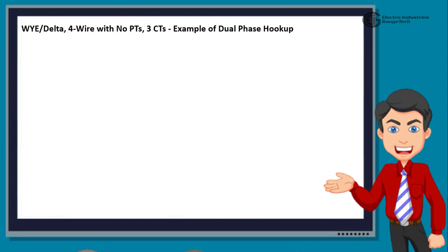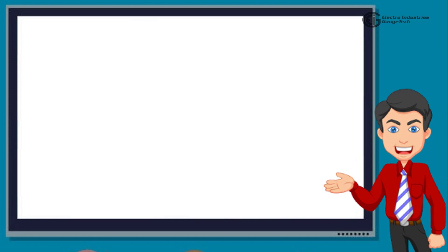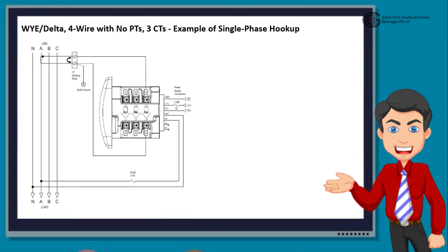For the same Y-Delta, 4 wire with no PTs, 3 CTs connection, an example of dual phase hookup is also shown here. In this case also, select 3 L Y from the Shark Meter's front panel display. Similarly, we have an example of single phase hookup shown in the diagram.